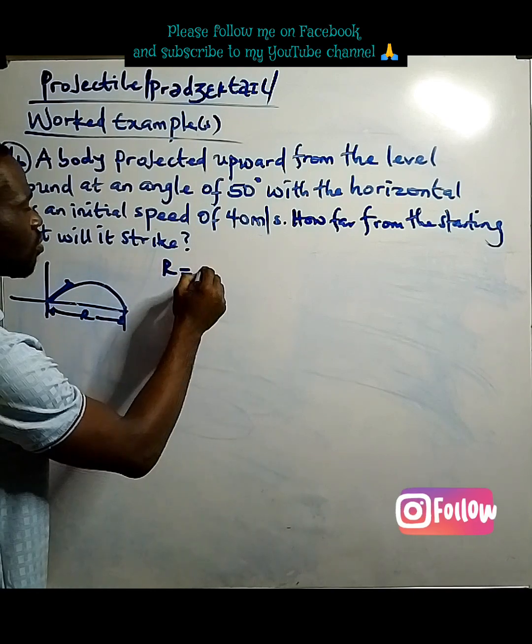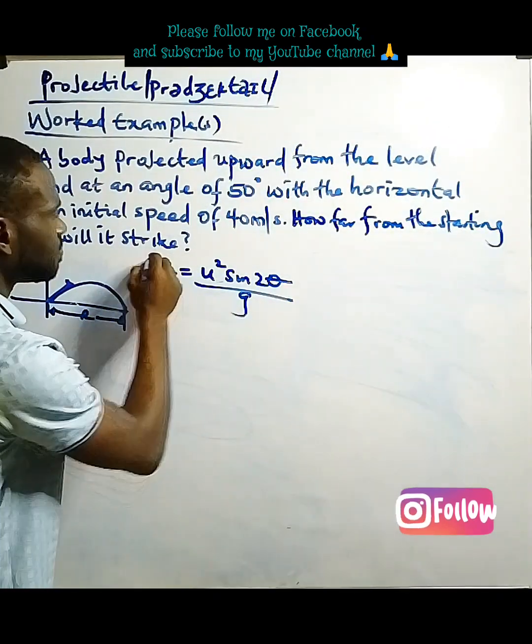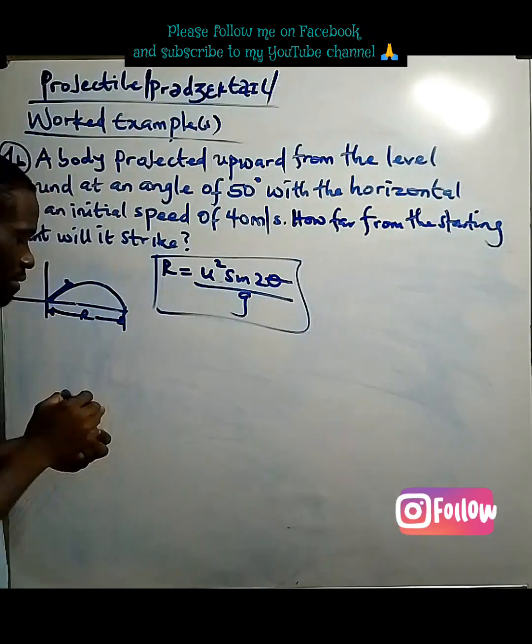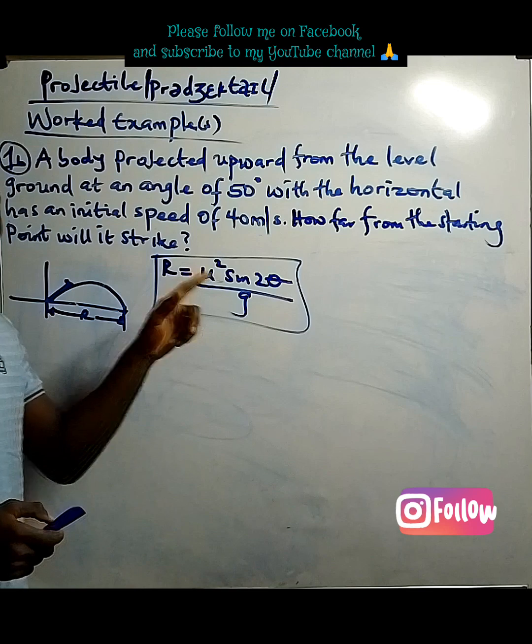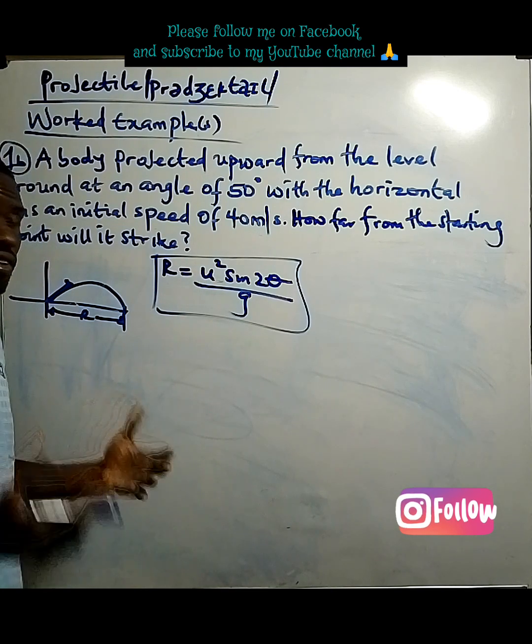Range equals U squared sine 2 theta over gravity. Range is U squared sine 2 theta over gravity. We've derived this formula in our previous lesson.